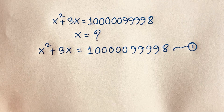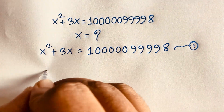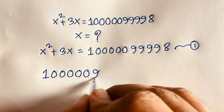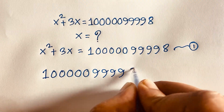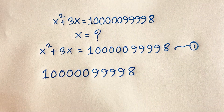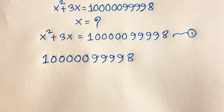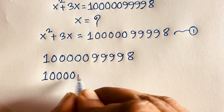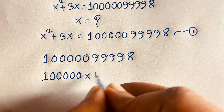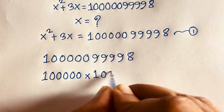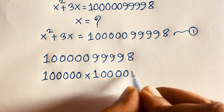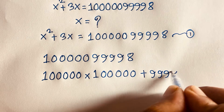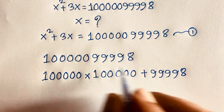First of all, if I evaluate this big number 1,000,099,998, I can see this number will be 1,000,000 times 1,000,050, plus 99,998. So this plus this will give us this.